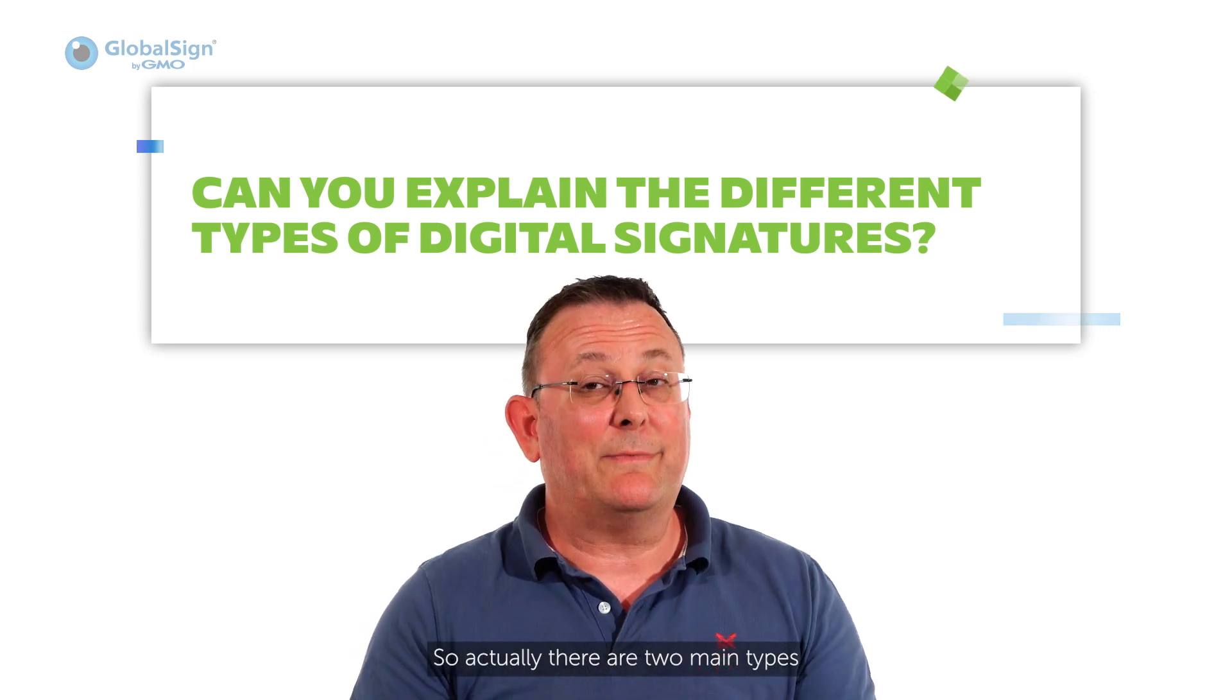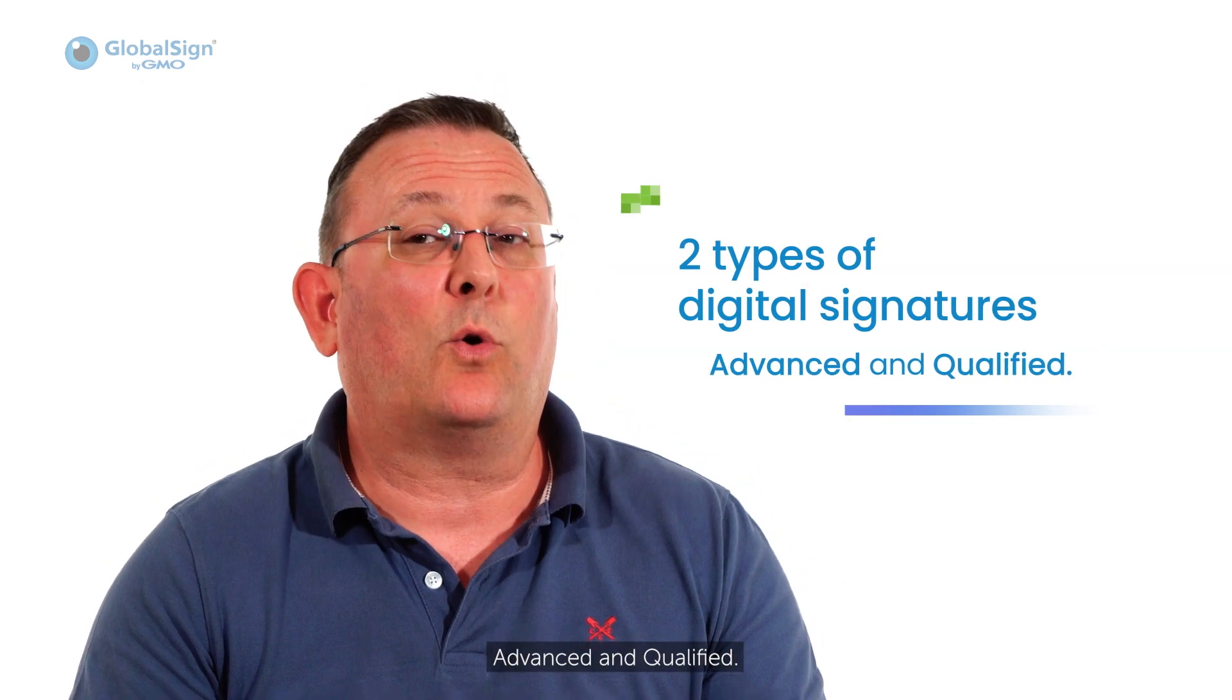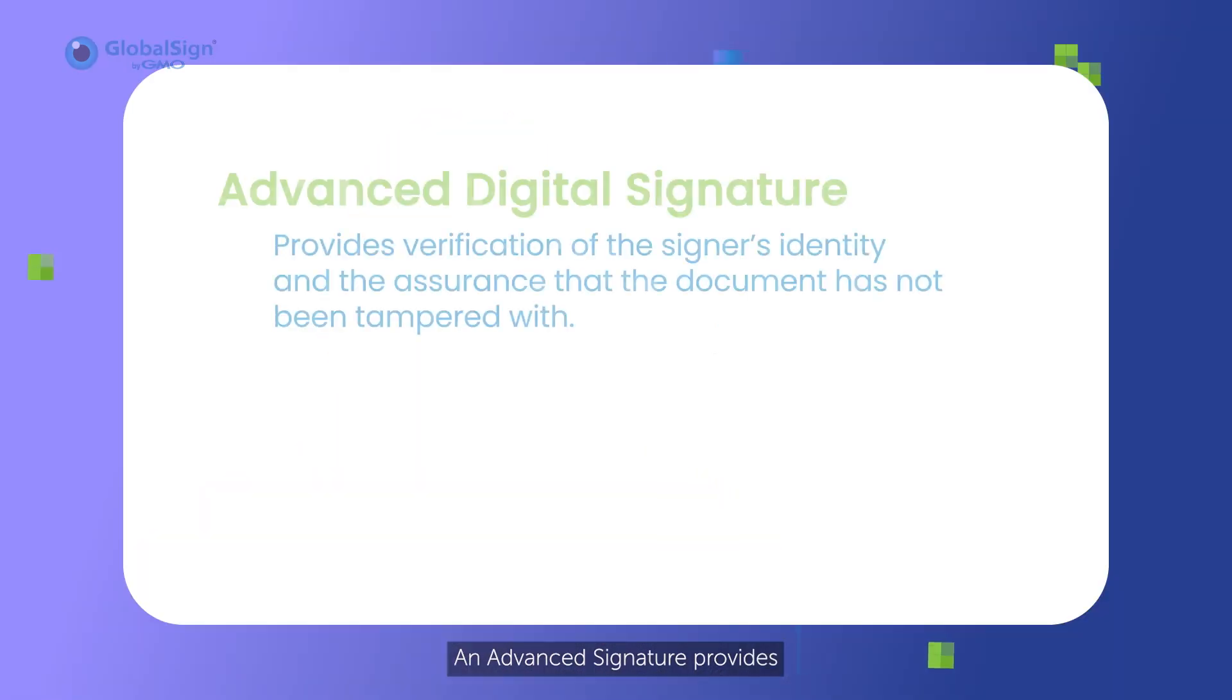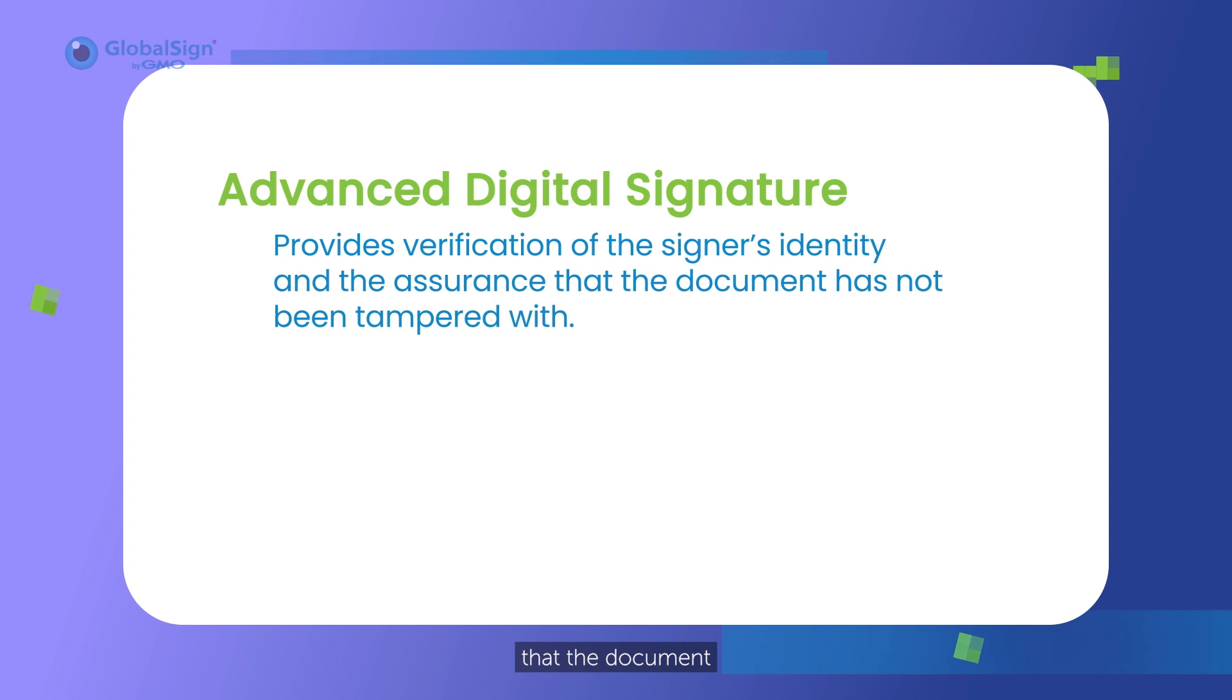Ah yeah, so actually there are two main types: advanced and qualified. An advanced signature provides verification of the signer's identity and assurance that the document has not been tampered with, as I mentioned earlier.